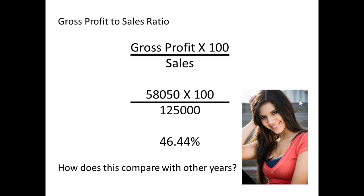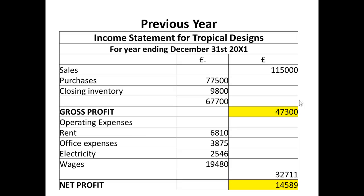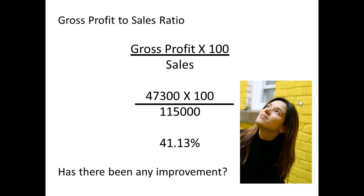The first question is: how does this compare with another year? Taking the previous year, the gross profit was £47,300 and the sales were £115,000. Calculating the gross profit to sales ratio for that year — £47,300 times 100 over £115,000 — gives 41.13%. So has there been any improvement? Yes, there has been a slight increase in that ratio from one year to the next.